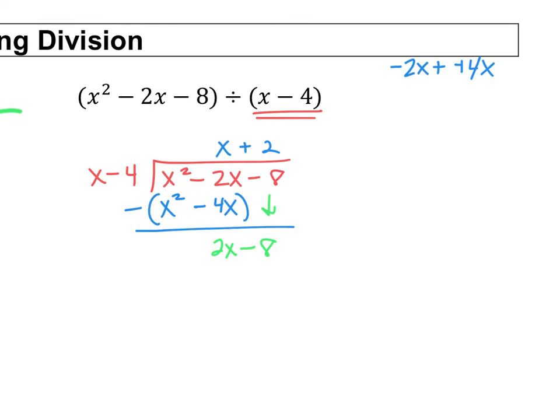And then we subtract, and we see that 2x minus 8 minus 2x minus 8 is 0. Final answer is this guy up here, x plus 2.